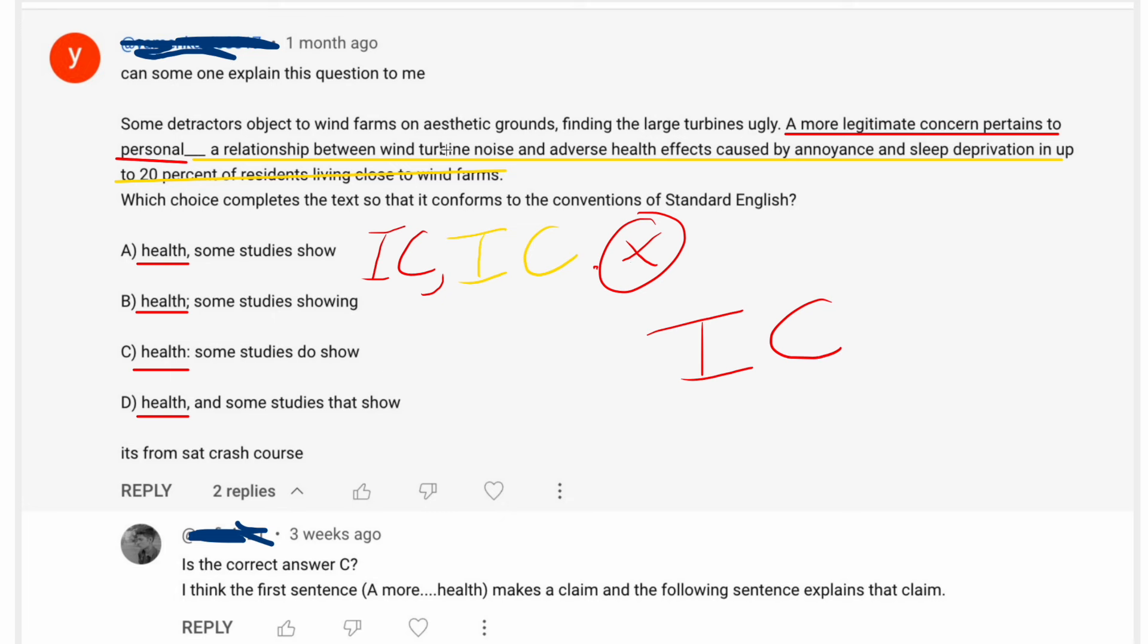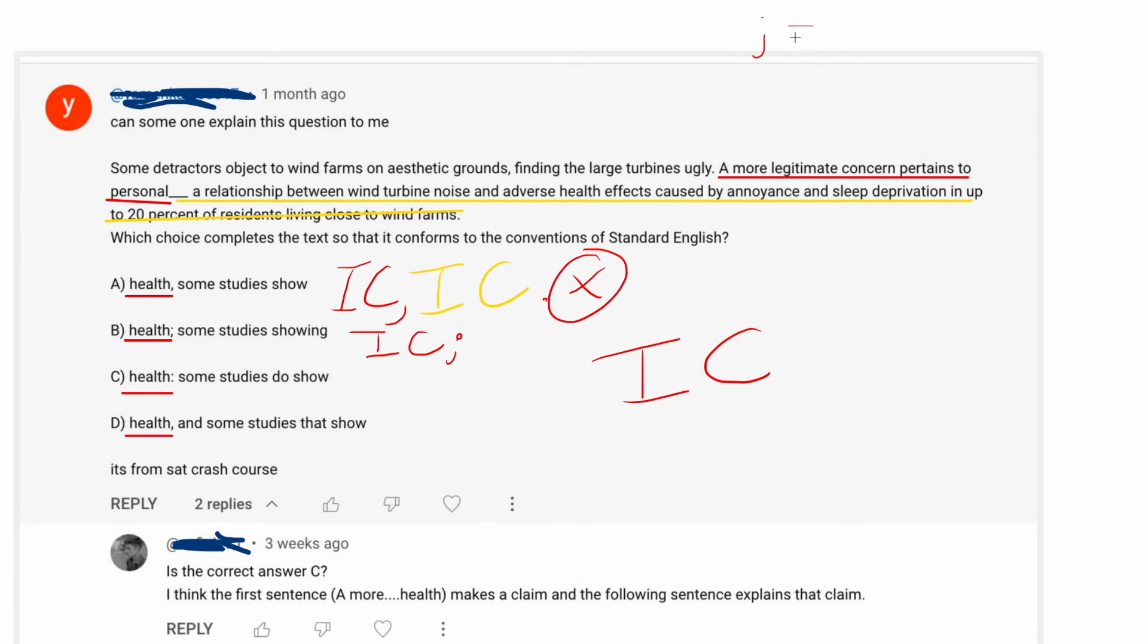You'll see it in other writing. Sometimes it's not the end of the world, but they're always going to consider it wrong on these tests. Okay, B is sort of the flip side of that error, because what we get here is, well, we have a semicolon. You want to remember that semicolon is basically the same thing as a period. It's going to be used to join two things that are independent clauses. But the problem with B is that this is not an independent clause.